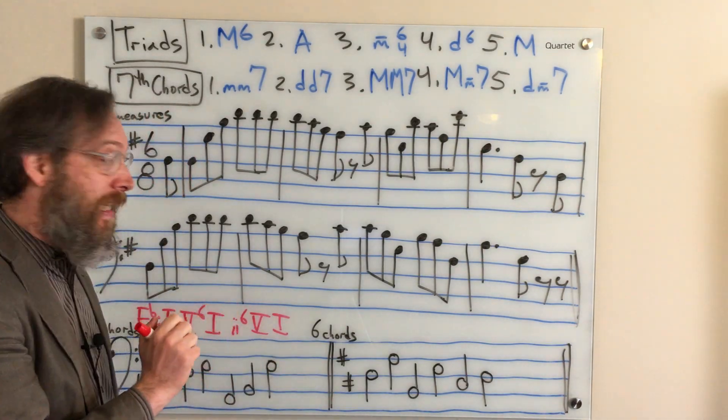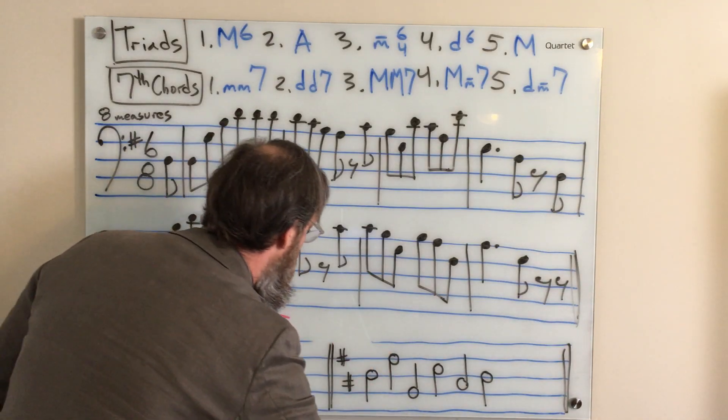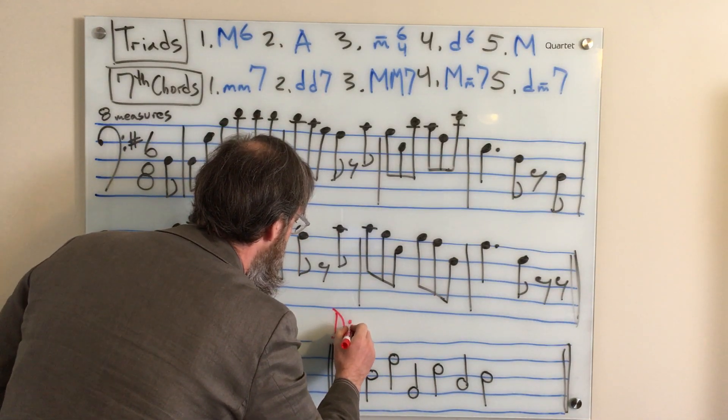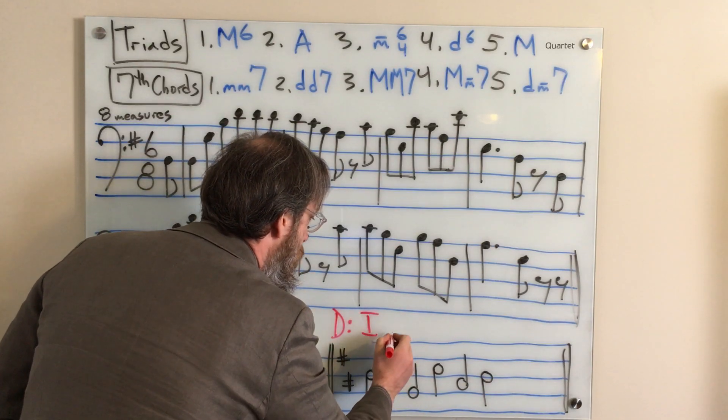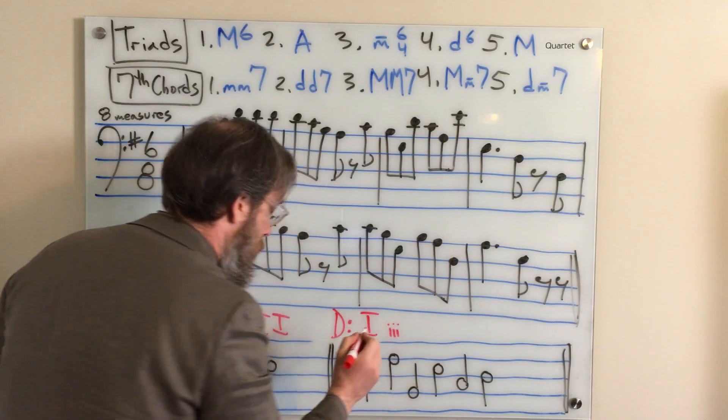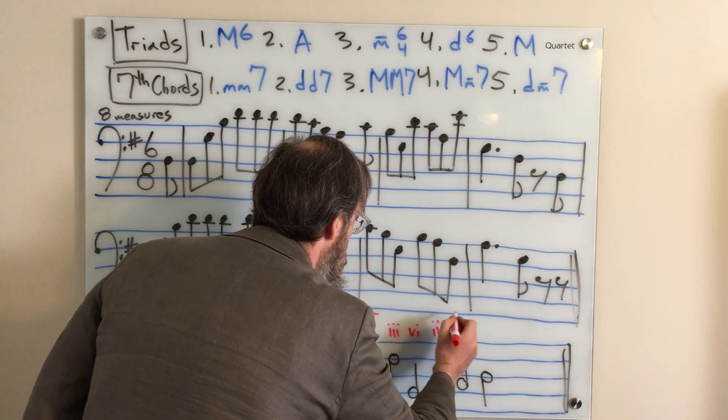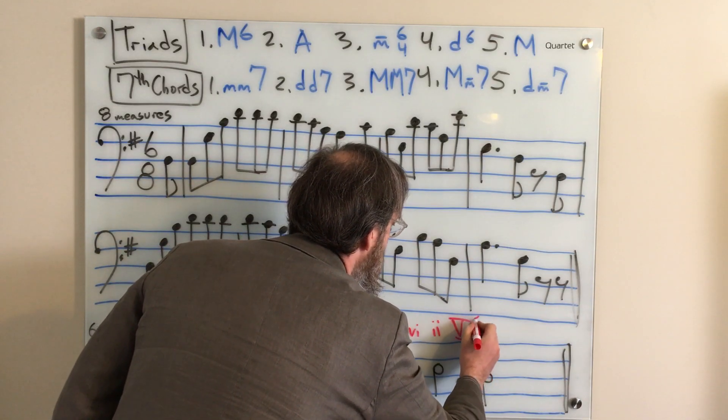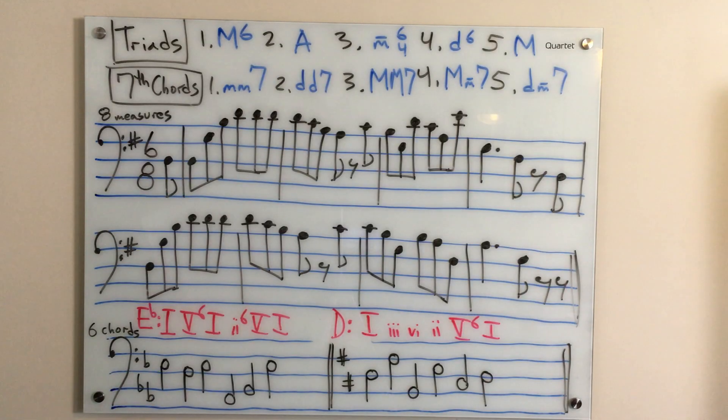For the next example in D major, again, what you're going to do is you're going to indicate the key, capital D, colon. It starts on a one chord. It goes to a three chord, then to a six chord, then a two chord, then a five chord in first inversion, ending on a one chord.